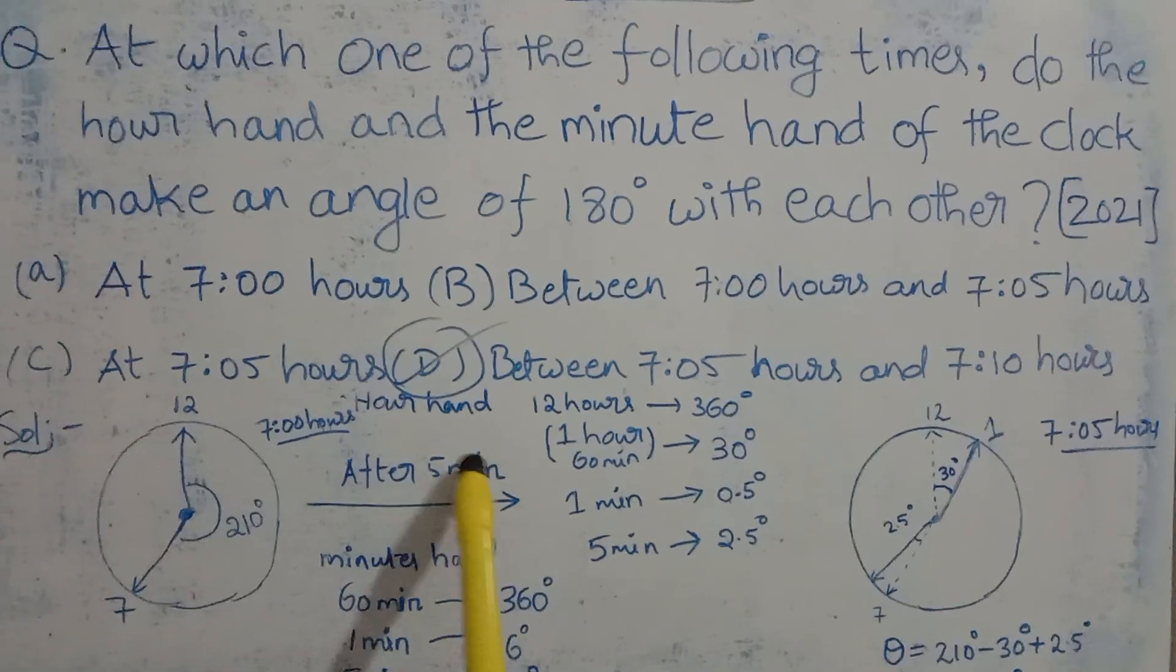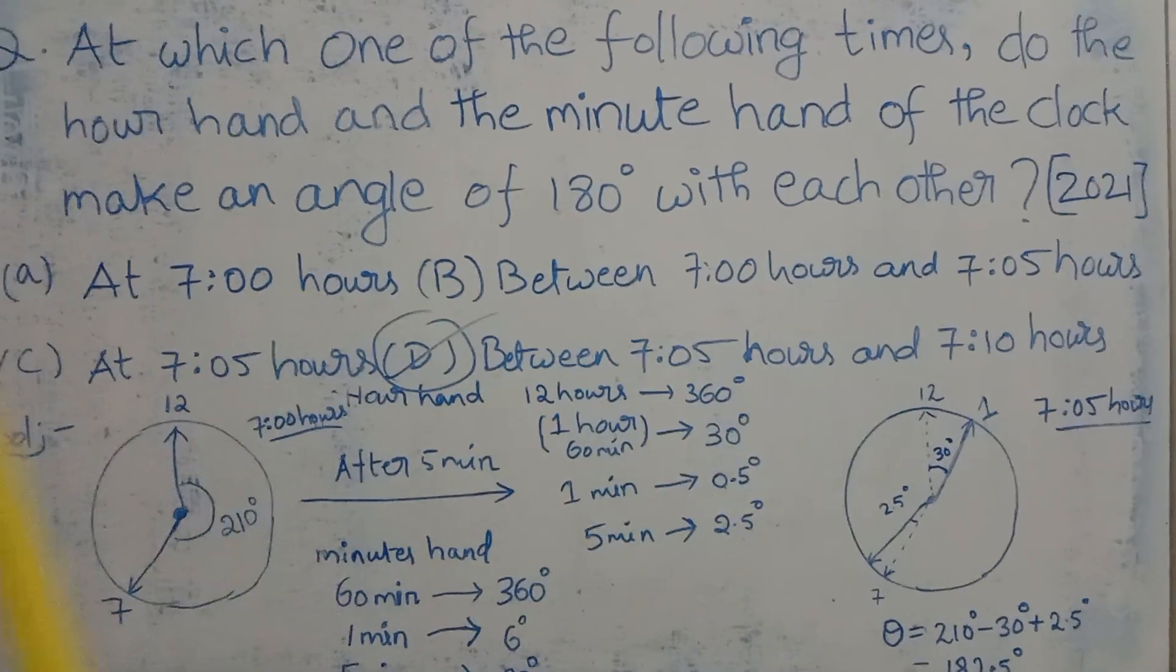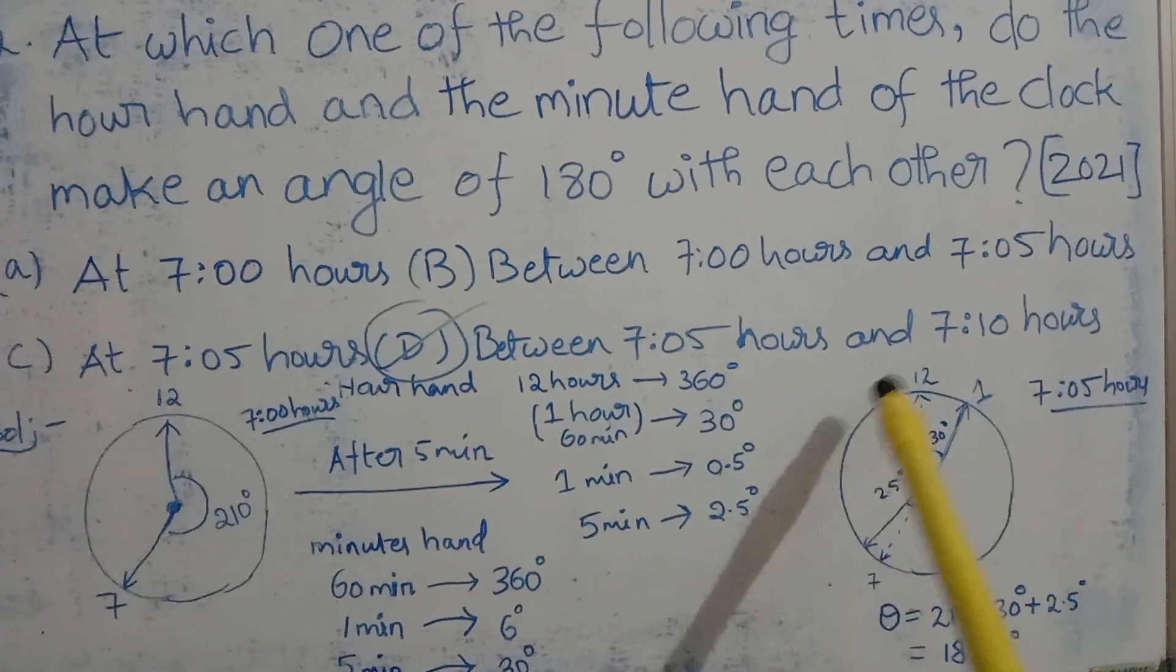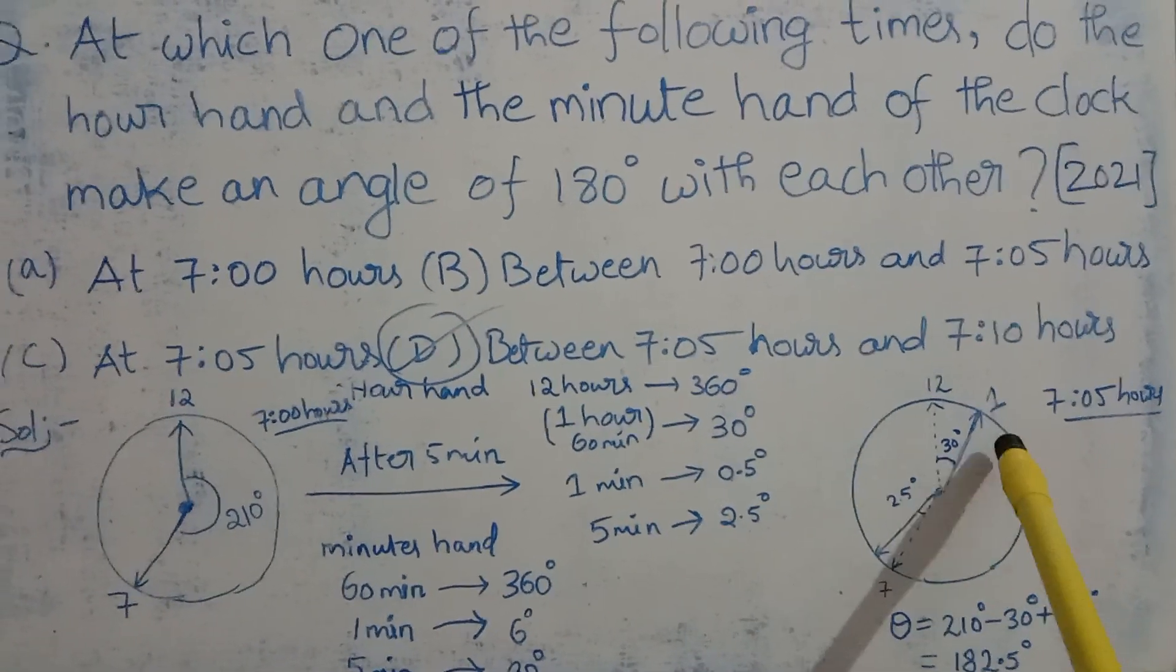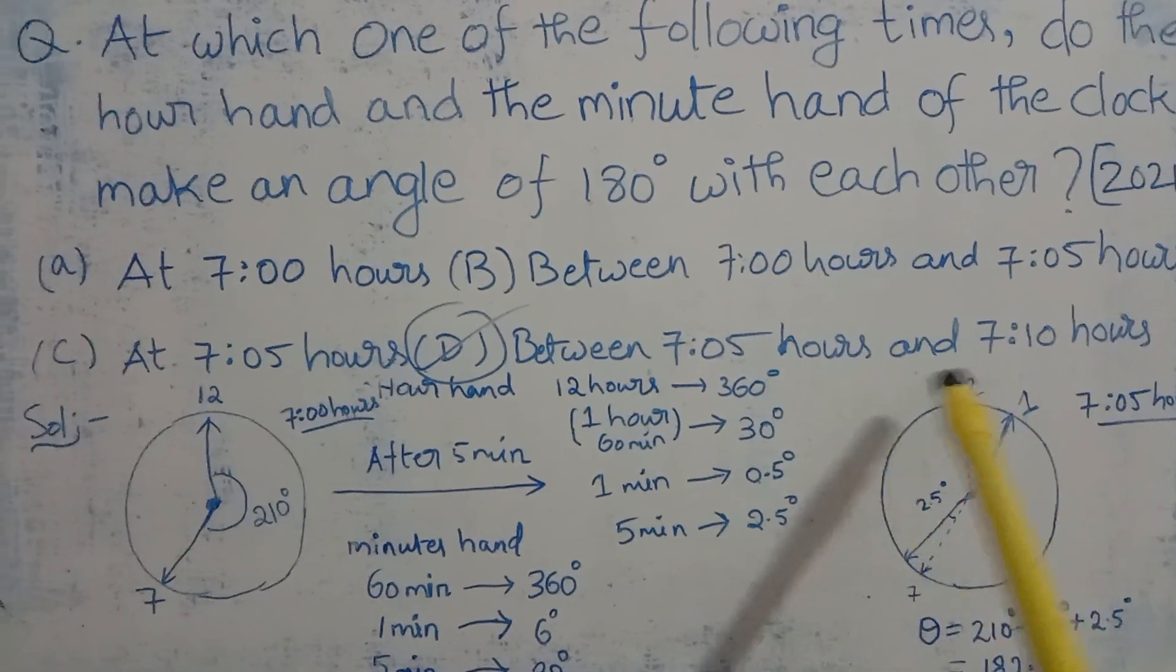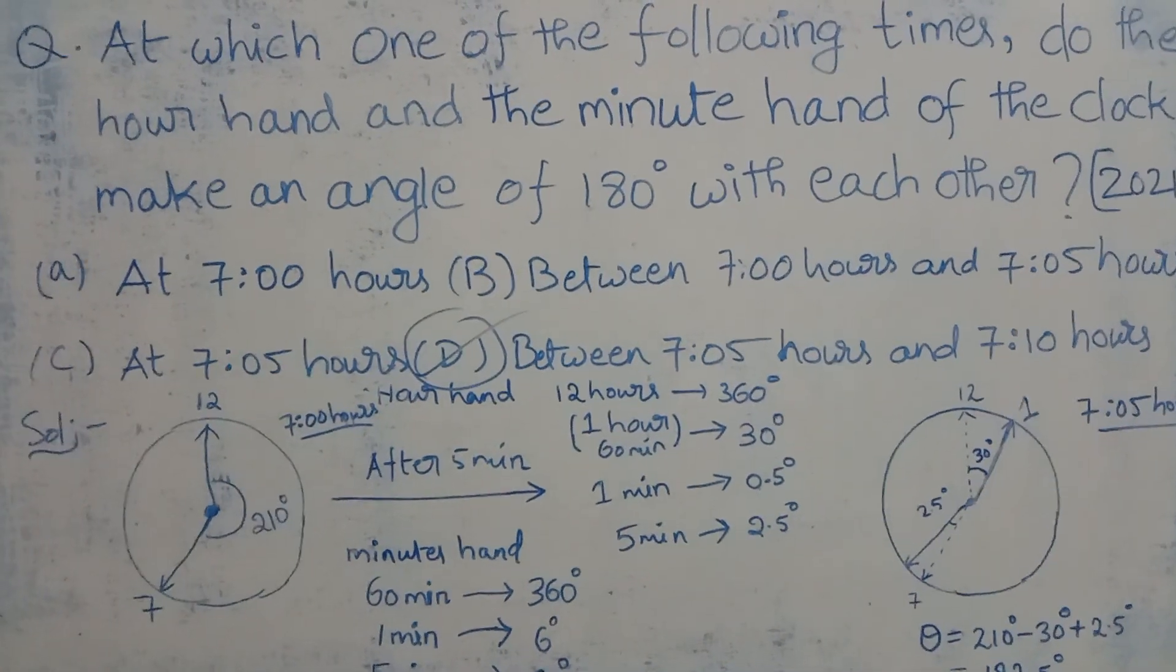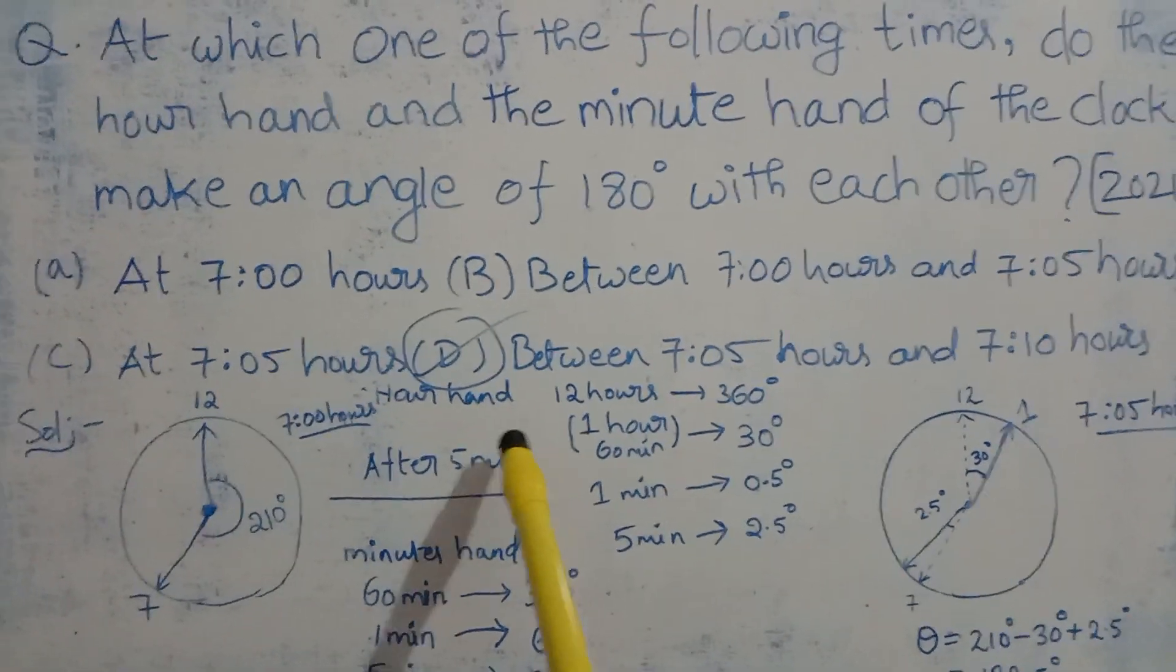After 5 minutes it will become 7:05. If we calculate the angle between the minute hand and the hour hand at 7:05, we can conclude the answer to this question. So let's do that.